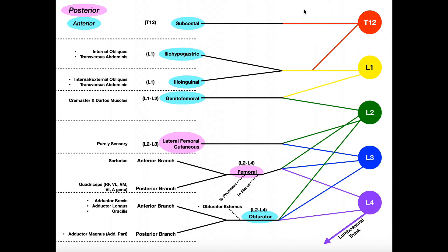In this video, we're going to go over a fairly complicated topic in anatomy and physiology: the lumbar plexus. We want to understand the various nerve roots that contribute to specific nerves, and the focus is going to be to classify those nerves of the lumbar plexus and, in general, what muscles they innervate. We'll see one that's purely sensory, though we're not going to be focusing heavily on sensory functions — that will be in a separate video.